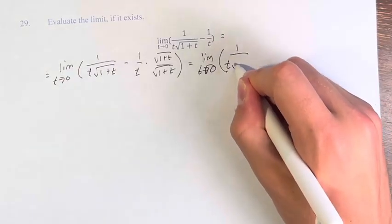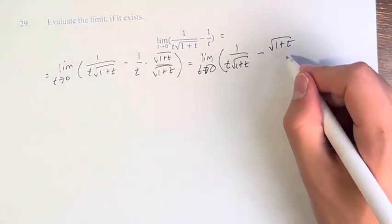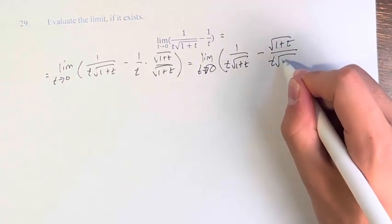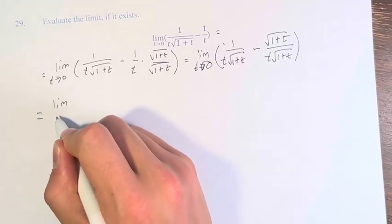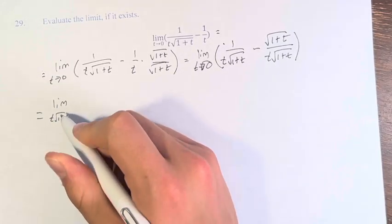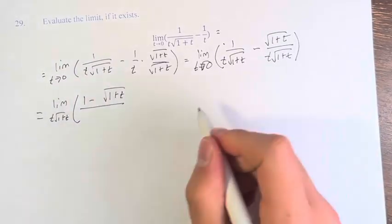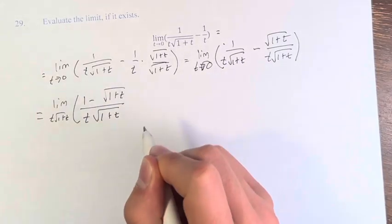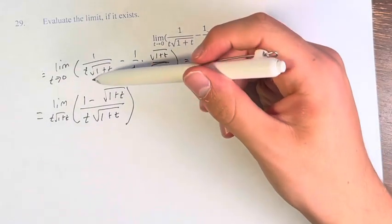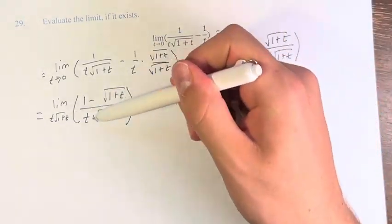We get 1 over t times the square root of 1 plus t minus 1 times the square root of 1 plus t — which is just the square root of 1 plus t — and then we have the same denominator. So we have 1 minus 1 times the square root of 1 plus t, and now we can combine and rationalize the numerator.